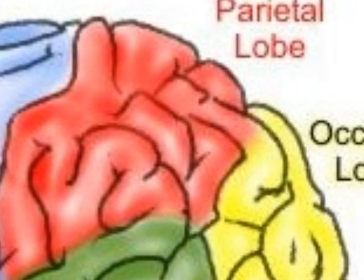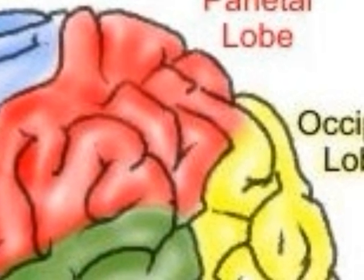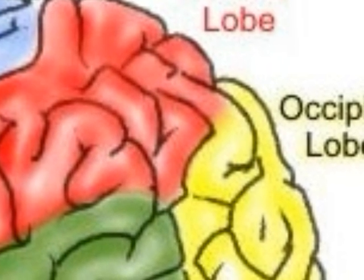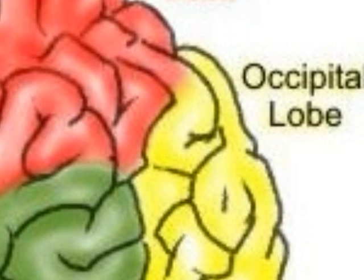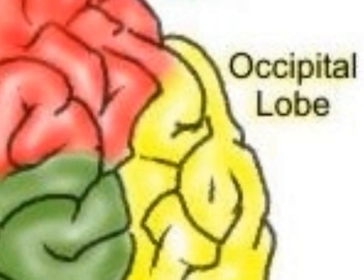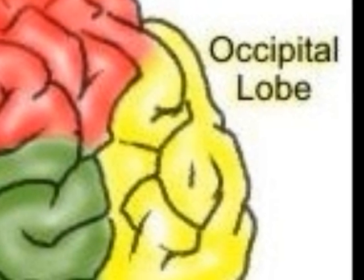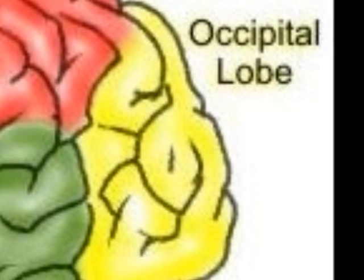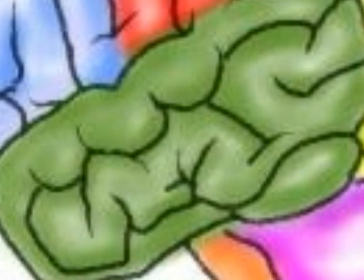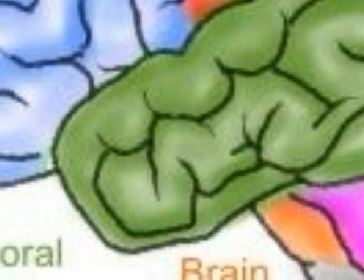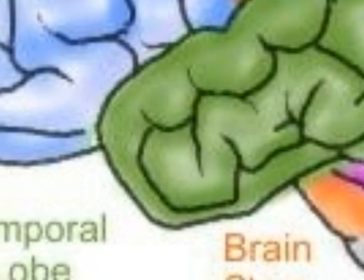The occipital lobes help us understand what we see. They decipher the colour, shape and distance of what we look at. Damage may result in a distortion of what is seen and difficulty recognising or interpreting familiar objects. The temporal lobes have many functions including hearing, memory and learning. Damage may cause problems with organising what to say and finding and using the correct words, and might also result in problems with short term memory.